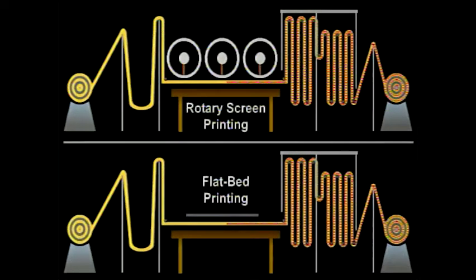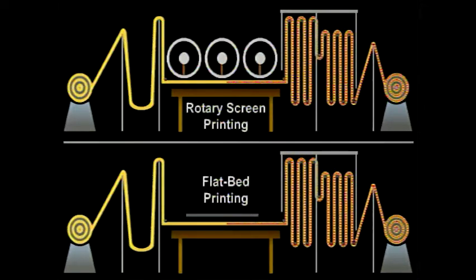The basic operations of rotary screen and flat screen printing machines are very similar. Both use the same type of infeed device, glue trough, rotating blanket or print table, dryer, and fixation equipment.